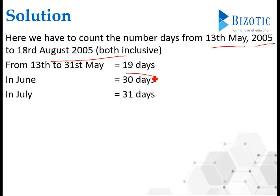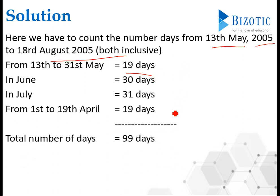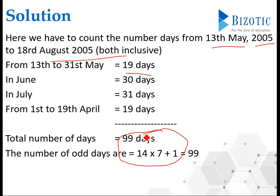Then June is 30 days, July is 31 days, and August 1st to 19th gives 19 days. Add all these days and you will get 99 days. After getting this, it's very easy to find the odd days. Divide 99 by 7 and you will have only one odd day.